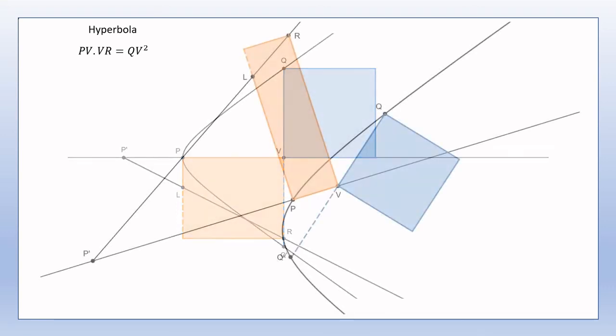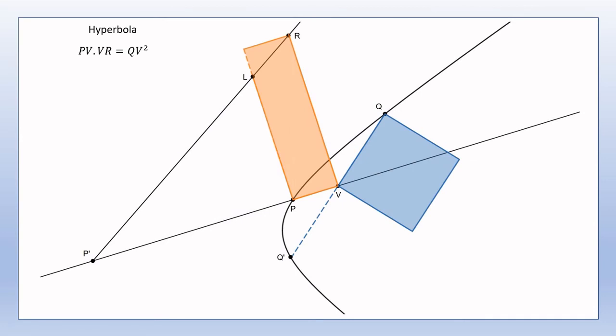Once again, Apollonius' definition of a hyperbola deals with the much more general case where the diameter of the hyperbola bisects a series of chords but not at right angles, as can be seen in the diagram. Even in this more general case, we still have that PV times VR is equal to QV squared.